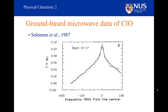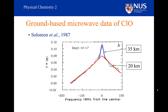A spectral line from 20 km should be about 10 times broader than one from 35 km. Prior measurements of ClO taken in 1984 over Hawaii showed ClO at around 35 km. When the instrument was deployed at McMurdo in Antarctica, the observed spectral line was essentially the sum of two peaks: a narrow peak from 35 km — the same size as those seen over Hawaii — and a peak about 10 times wider, indicating ClO at 20 km altitude, with a much larger intensity.